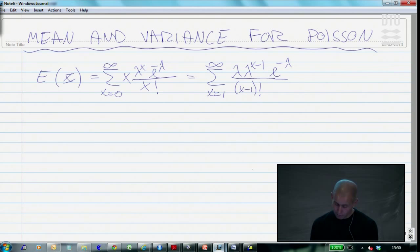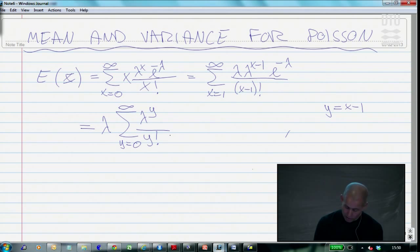Then, let's see, we take the lambda here, and put outside, and back in there, we do the classical change of variables, and instead of having x, I use y for x minus 1. And then when x is 1, that corresponds to y being 0, and we're just going to take everything still up to infinity. When x is infinity, there's also y infinity. And we have lambda to y divided by y factorial, e to minus lambda. And then we're basically done,